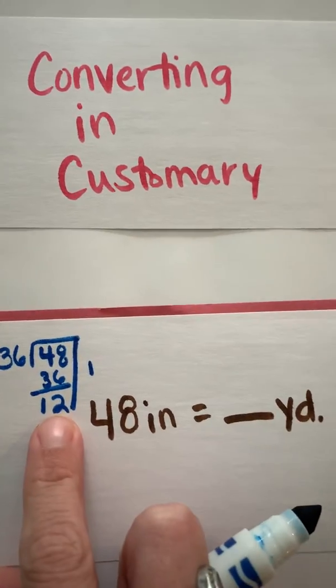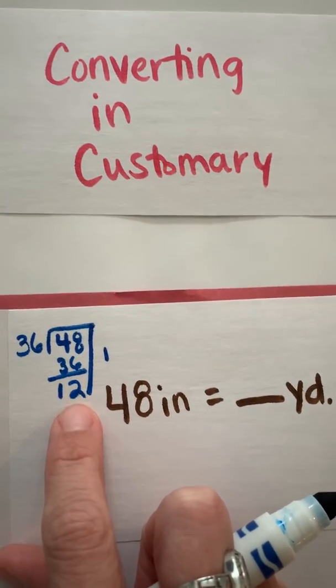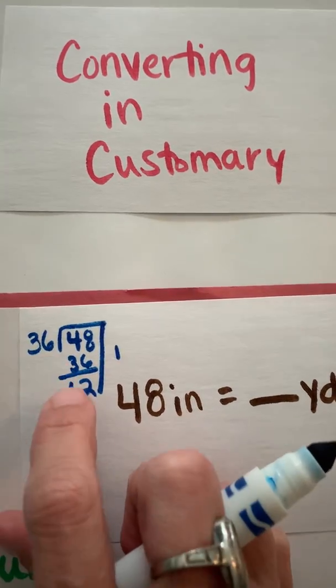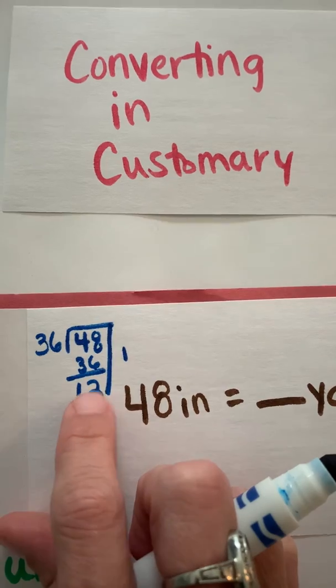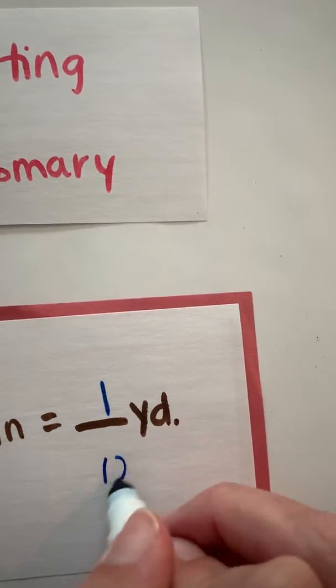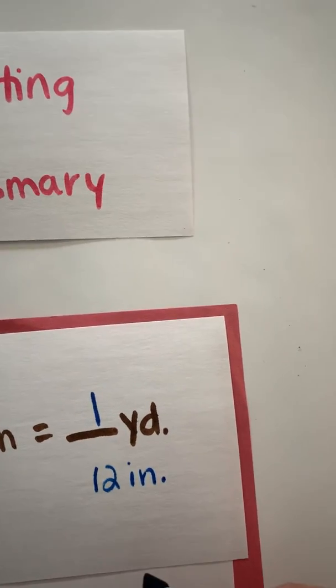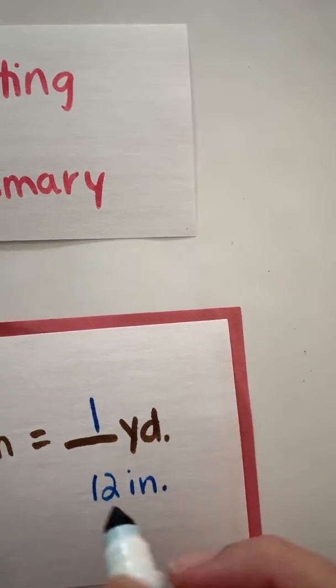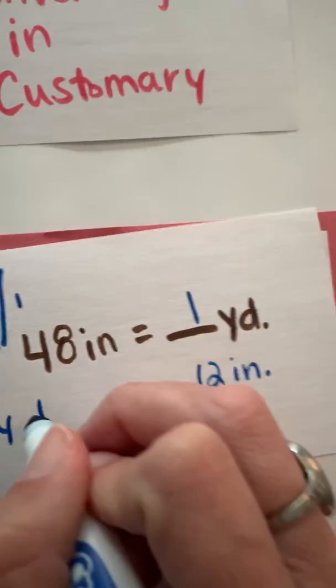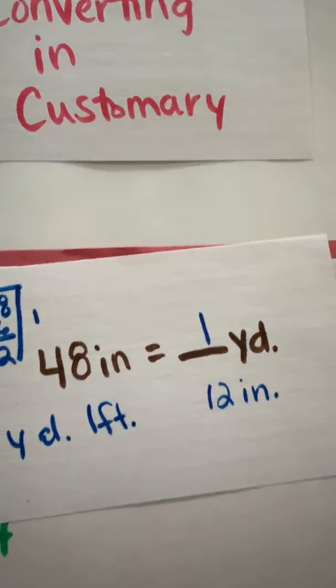Now I know that I'm done—that's going to be my remainder or my remaining inches because if it's less than my divisor, then I know that I can't get another group of 36 out of there. So this is actually going to be 1 yard and 12 inches, or I could think of it as 1 yard and 1 foot.